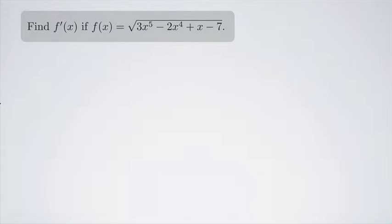So this is a chain rule problem because we have a function of a function. We have the square root of a polynomial. And the chain rule, one way to think about it,